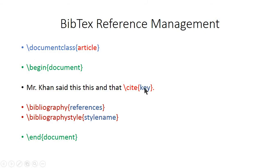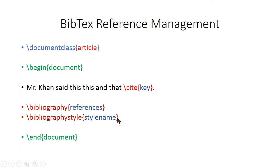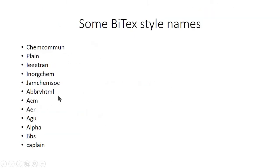After typing your citation, press the compile button, then go to Tools > Commands and click BibTeX. After that, compile the document again and you will see the results. Regarding bibliography style names — there are many styles available. You can search for BibTeX style names on Google and find hundreds of styles. Whatever style you want, just type that name in the \bibliographystyle command. Now let's move to the practical tutorial.